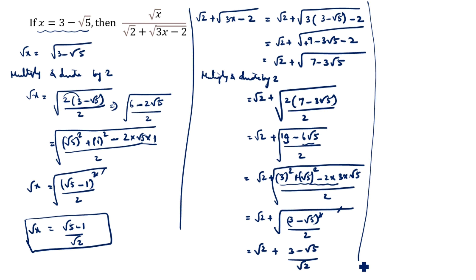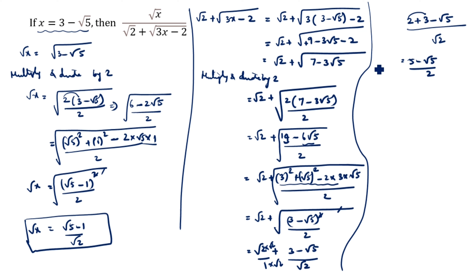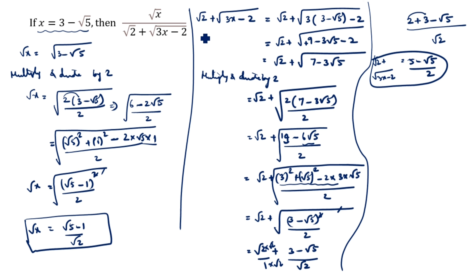Next step: we take common √2. So we get √2 into (1 plus √2·(1/√2)·... Expanding: √2 into √2 is 2, so 2 plus 3 minus √5 equals 5 minus √5 divided by... So √(3x minus 2) expression gives us 5 minus √5 divided by √2. Now: √x = (√5 minus 1)/√2, and √2 plus √(3x minus 2) = (5 minus √5)/√2.